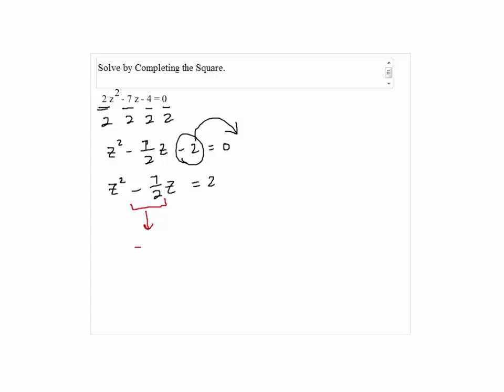Then we take half of b, which is negative 7 half divided by 2, which is negative 7 fourths. And then we are going to square the negative 7 fourths. That is 49 over 16. That is the number we are adding on both sides.